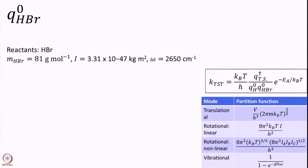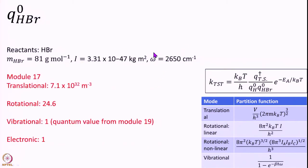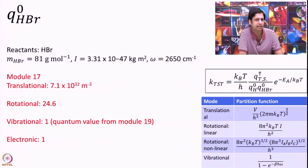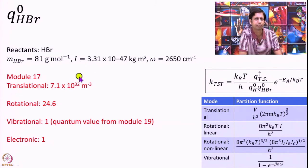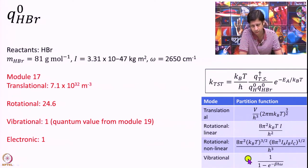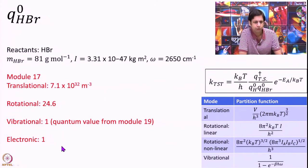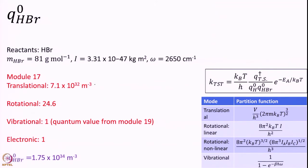For HBr, the data needed will be: mass, moment of inertia, and the frequency. We already calculated all the components in a previous module (module 17), so I am not going to redo it today. The translational partition function is roughly 10³², rotation is roughly of order 25, vibration is very close to 1 (using the quantum version, not classical), and electronic is 1 (the electronic degeneracy of HBr). Multiplying all these together gives the partition function for HBr.